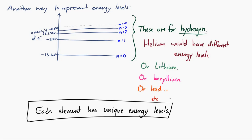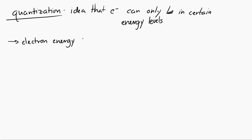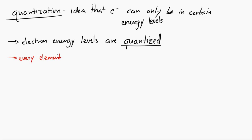The idea that these electrons can only exist in specific energy levels is called quantization. We say that the electron energy levels are quantized — they can only have very specific values and are not allowed to have other values. Also, every element has its own electron energy levels: hydrogen's we saw, helium is different, and every other element is different.